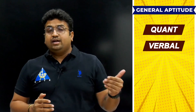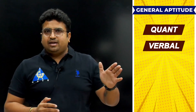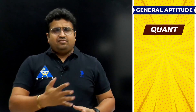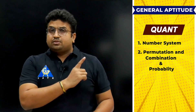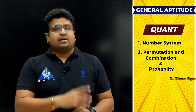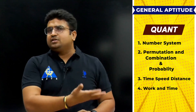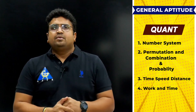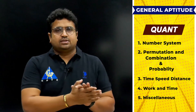In Quant and DILR, I have divided the content into five different topics. The first one is number system. The second is permutation, combination, and probability. The third is time, speed, distance, and work and time. And furthermore, there is a miscellaneous section. So more or less, these are the topics.